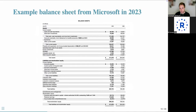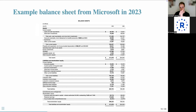In practice, things are much more detailed. This is an example from a Microsoft SEC filing for 2023. You can see the assets, liabilities, and stockholders' equity with the higher-level categories we've discussed.